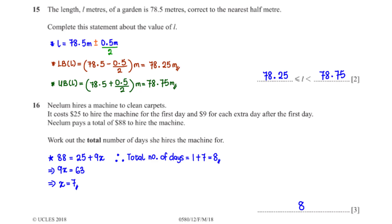Neelum hires a machine to clean carpets. It costs $25 to hire the machine for the first day and $9 for each extra day after the first day. Neelum pays a total of $88 to hire the machine. Work out the total number of days she hires the machine for. We see that Neelum pays a total of $88 which is greater than $25. This means she hires the machine for more than one day. So $88 equals the amount she paid for the first day, which is $25 plus the amount she paid for the remaining days, which is $9 times x. When we subtract 25 from both sides, this is what we get. And when we divide both sides by 9, we get x equals 7. This means she hired the machine for 7 extra days. So the total number of days is 1 plus 7 which is equal to 8.